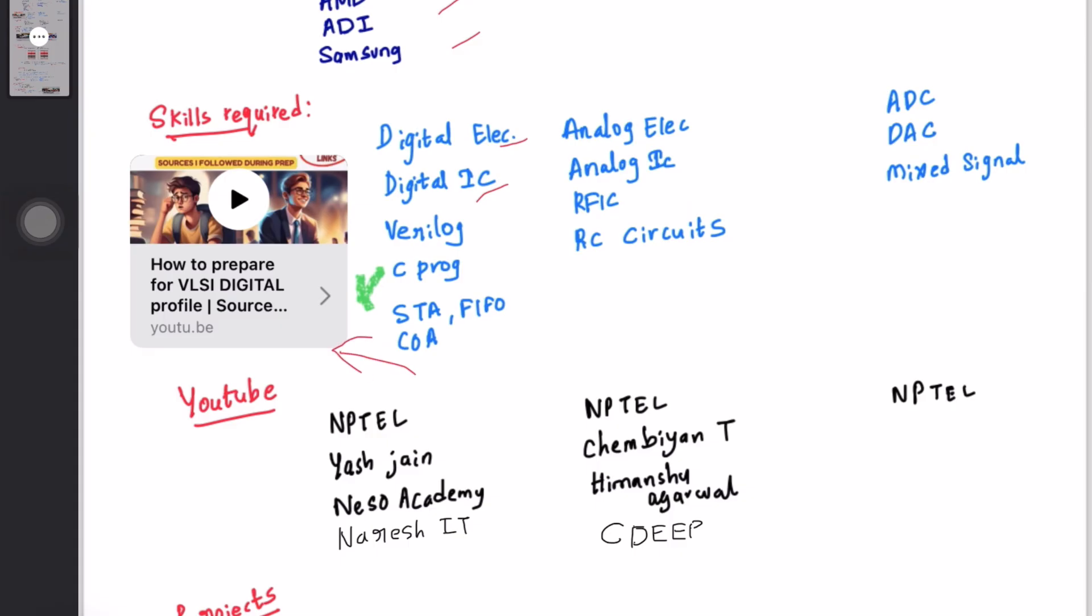This PDF will be uploaded in my Telegram channel. You can check the link in the description below. For analog VLSI profile, some of the subjects you need to study are analog electronics, analog IC, RFIC, RC circuits, and etc. Please note the assumption made here is that you have clear understanding of all the basics of all gate subjects.